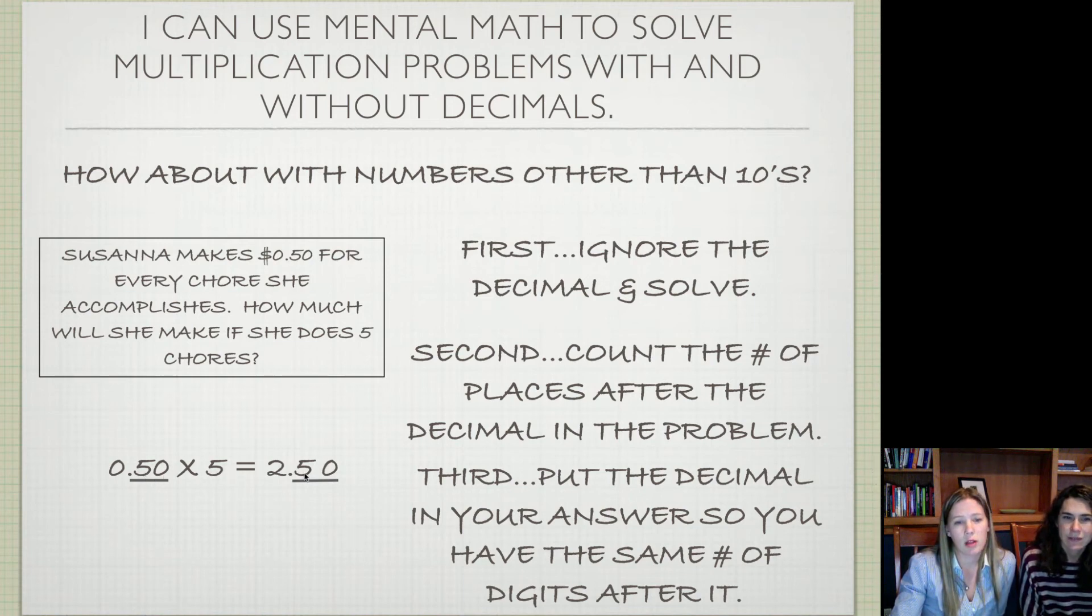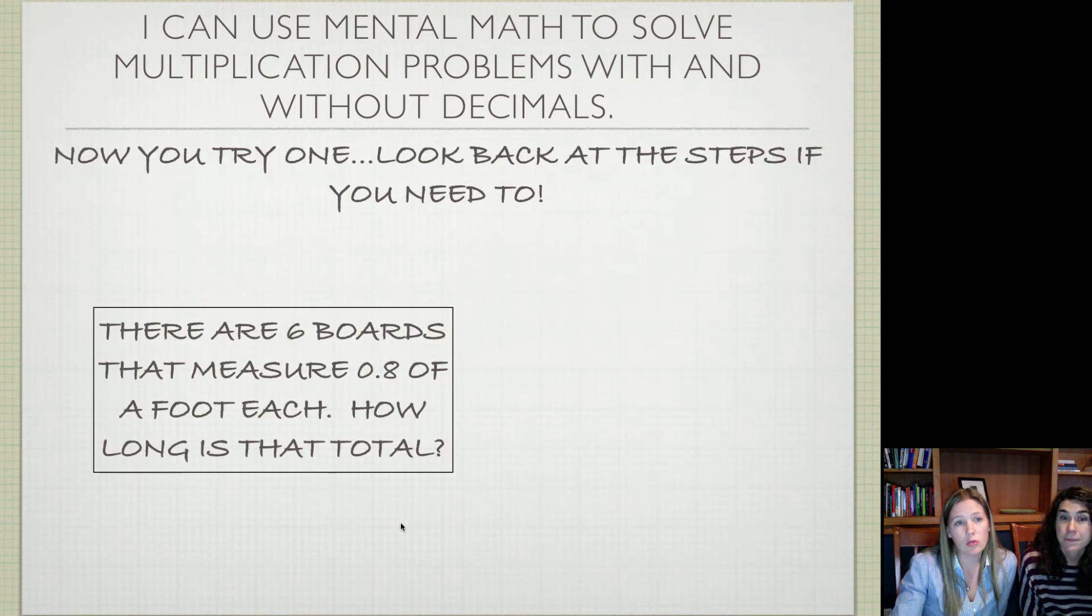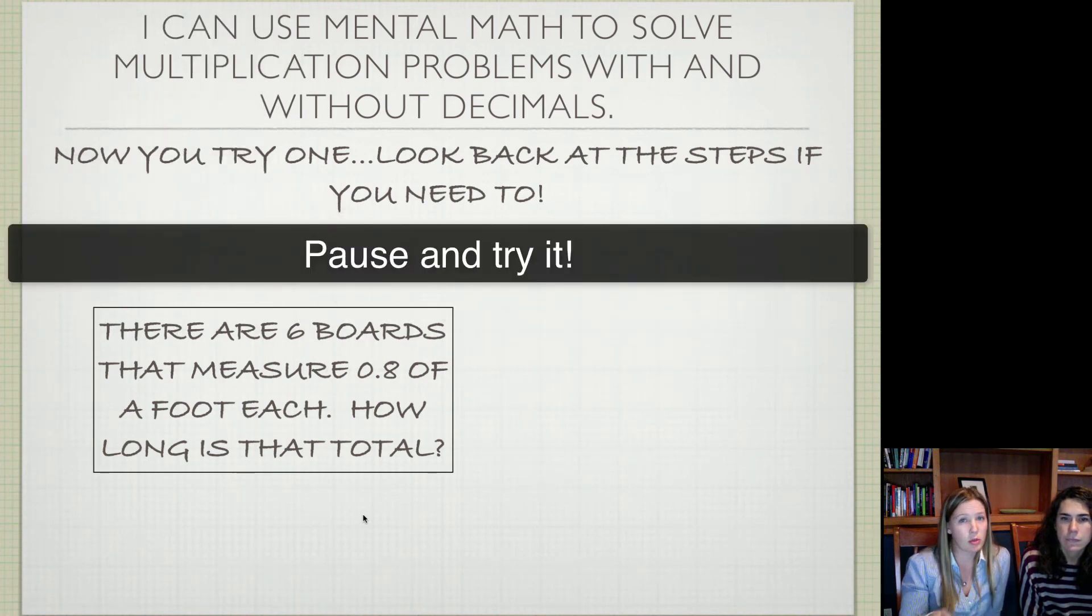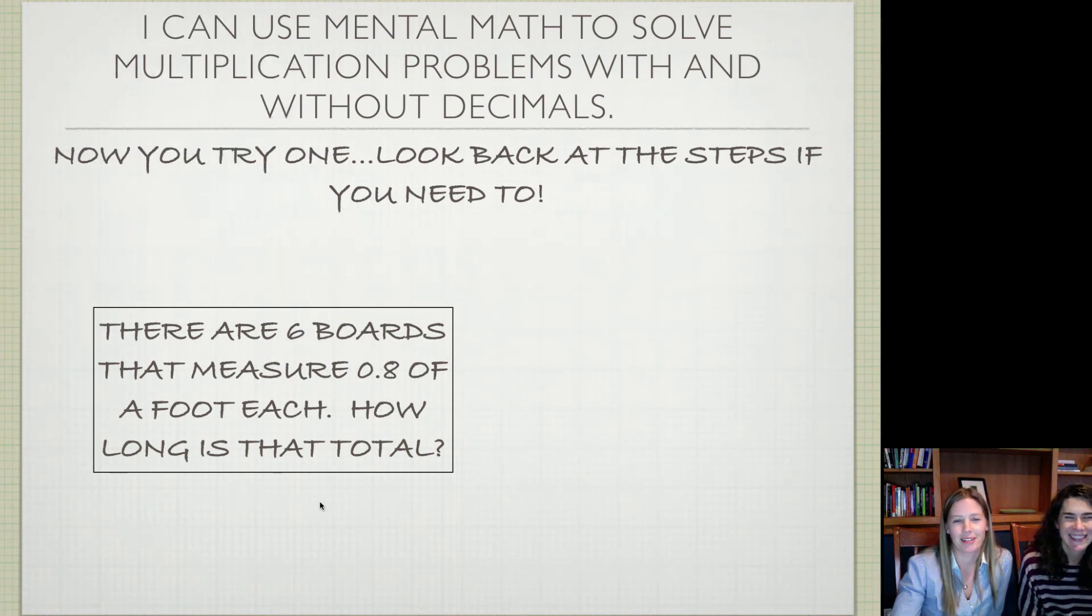You ignore, multiply, count how many come after it, and put it in your answer. You do have to try this one now. If you need to, look back at the steps. We will give you the answer to this, but try it on your own and see how you do. It's not going to help you at all if you just keep going and write the answer down. There are 6 boards that measure 8 tenths of a foot each. How long is that total? Again, you multiply 6 times 8 tenths.